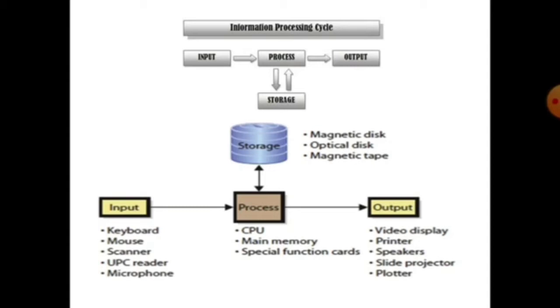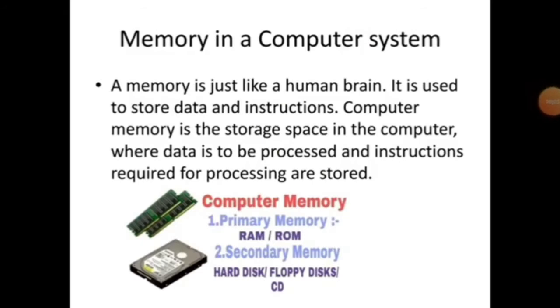Next is processing device, that is CPU. As we know, computer has a very large memory to store the information. A memory is just like a human brain. It is used to store data and instructions. Computer memory is the storage space in the computer where data is to be processed and instructions required for processing are stored.